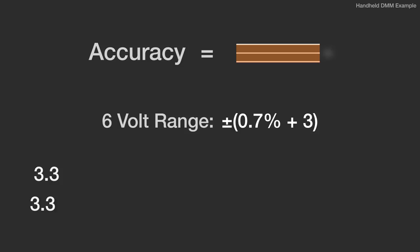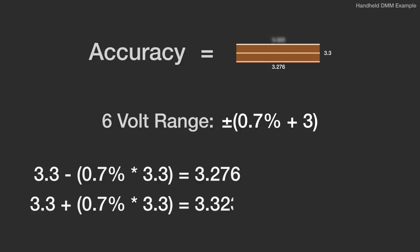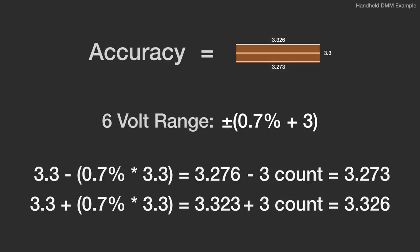Well, it tells us how to calculate the range that might get displayed for a specific measurement. For example, let's assume a perfect 3.3 volt signal. We have to add and subtract 0.7 percent of that reading to get a range of 3.276 and 3.323. Now, the plus 3 of the spec means extending the least significant digit by 3 counts, which turns the final range into 3.273 and 3.326 volts.